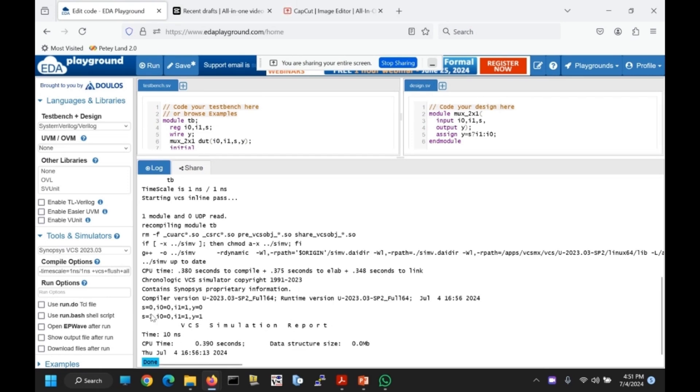As you can see the circuit outputs, y is equal to I0 when s is equal to 0, y is equal to I1 when s is equal to 1.